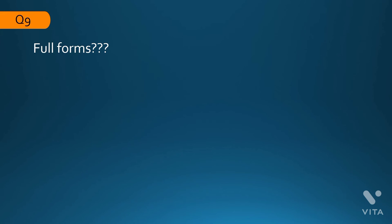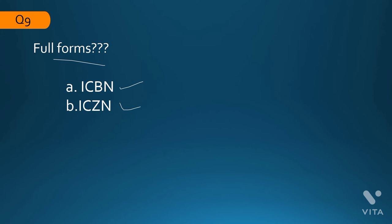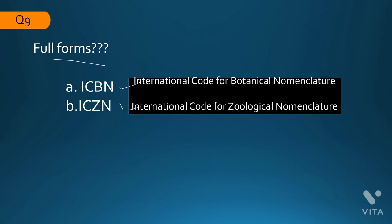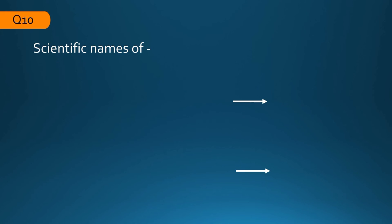The next question is about full forms — not an MCQ but important to know. ICBN and ICZN: if you know the answers, comment down below. The answers are: ICBN stands for International Code for Botanical Nomenclature, and ICZN stands for International Code for Zoological Nomenclature.